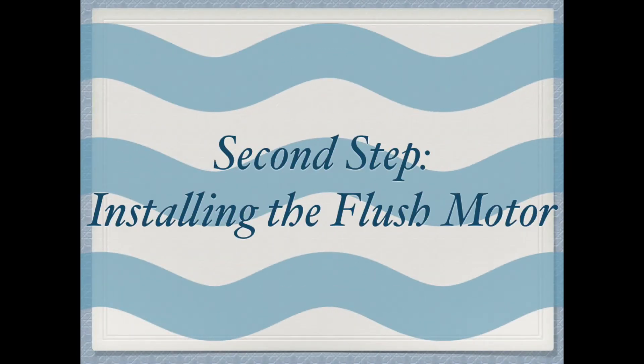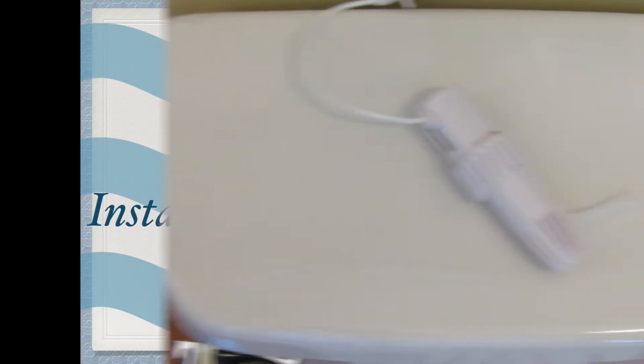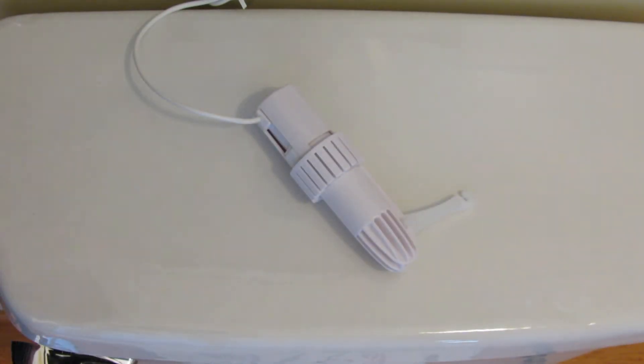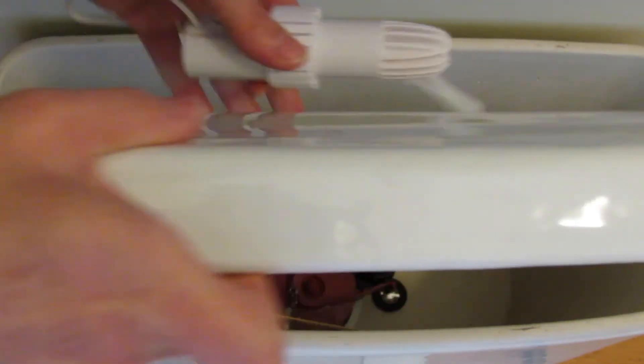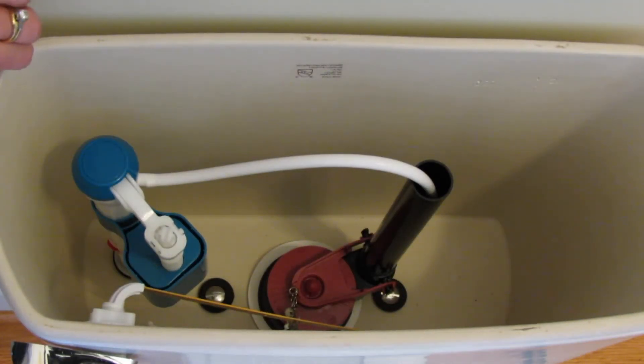In this second step, we will be installing the flush motor. At this point, you can drain some of the water from the tank, although this is not necessary, by turning off the water valve and holding the flush lever down. To begin, remove the lid from the tank and place it to the side.